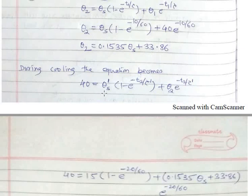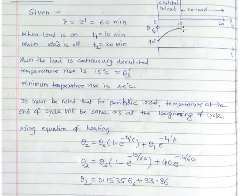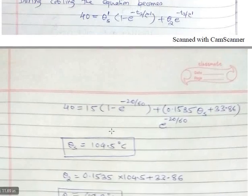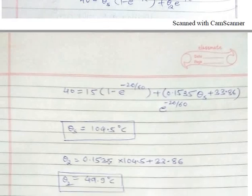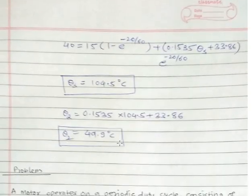During cooling, at the end of the half cycle the temperature must return to 40 degrees Celsius, so: 40 equals theta S dash times (1 minus e raised to minus T2 upon tau dash) plus theta 2·e raised to minus T2 upon tau dash. Here theta S dash is known as 15 degrees Celsius, T2 and tau dash are known, and theta 2 was calculated from the heating equation. Substituting these values, we can calculate theta S, and with that value of theta S substituted back into the heating expression, we obtain theta 2. So both theta 2 and theta S are determined.